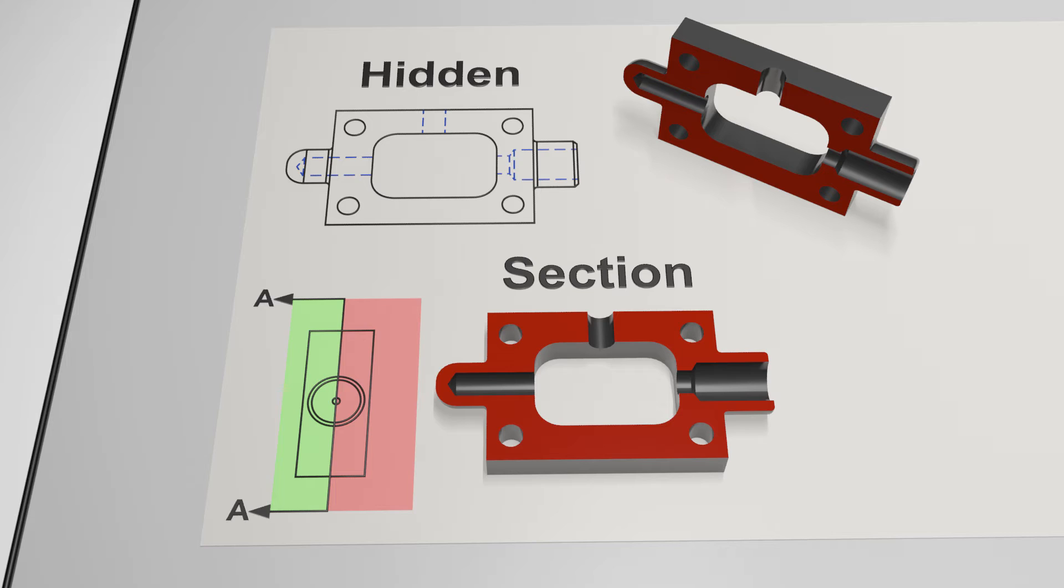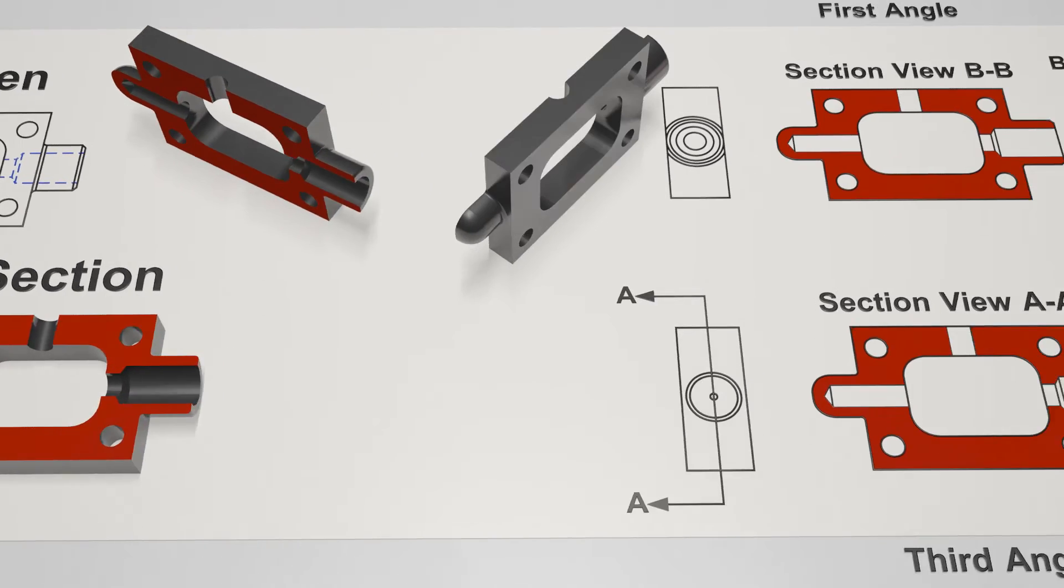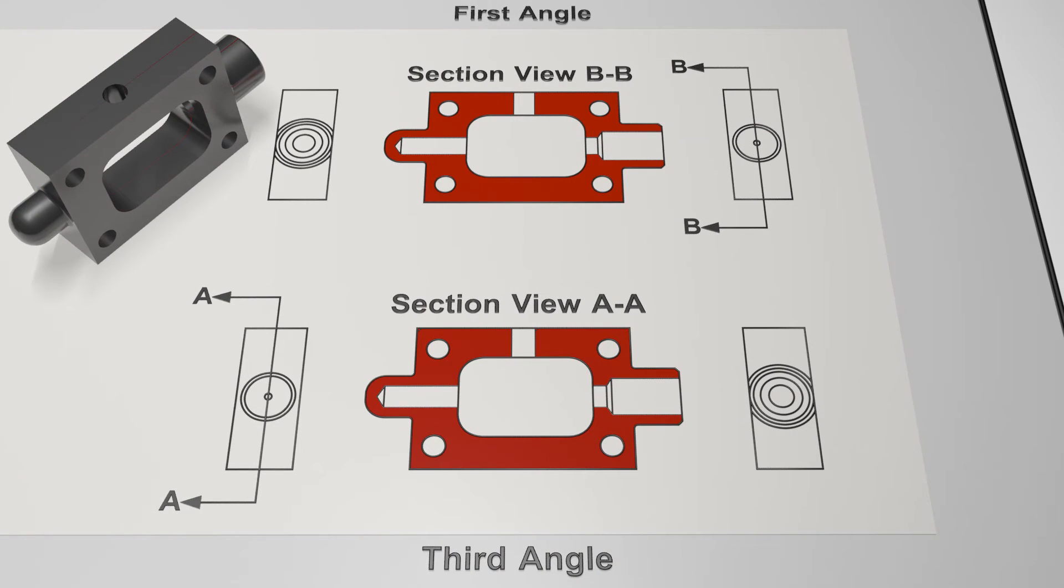Now seeing this in my 3D graphics style is all well and good for understanding the idea, but let's make sure you guys understand the basics of laying this out on a drawing before I let you go. As you can see, when creating a section view you've got to take into account whether you're using first or third angle projection.